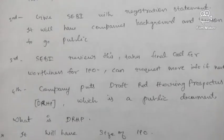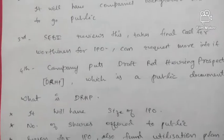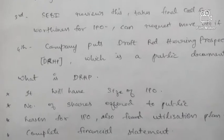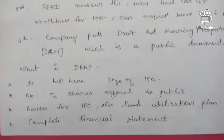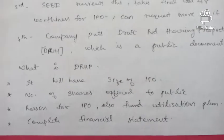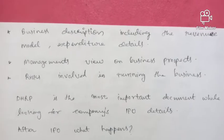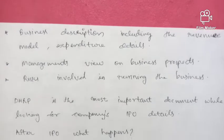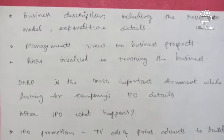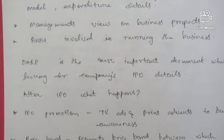The fourth step is the company puts out a Draft Red Herring Prospectus, or DRHP, which is a public document. The DRHP contains the size of the IPO, the number of shares offered, the reason for the IPO, the utilization plan for the funds, a complete financial statement, business description including the revenue model and expenditure details, management's view on business prospects, and the risks involved in running the business. The DRHP is the most important document when looking at a company's IPO.